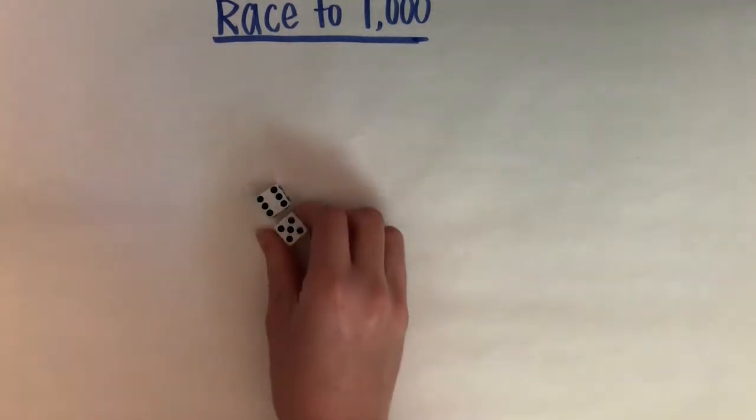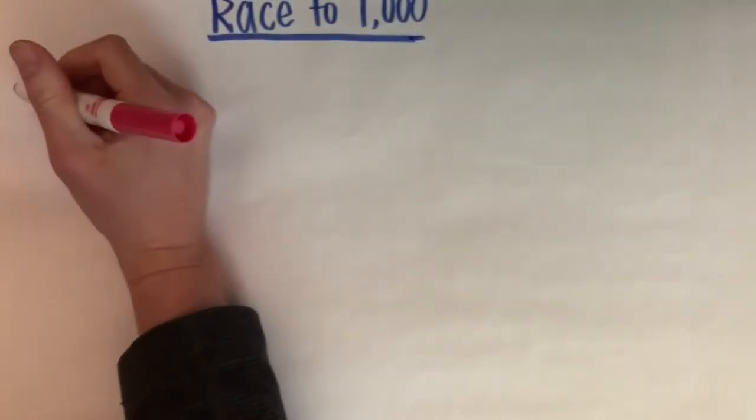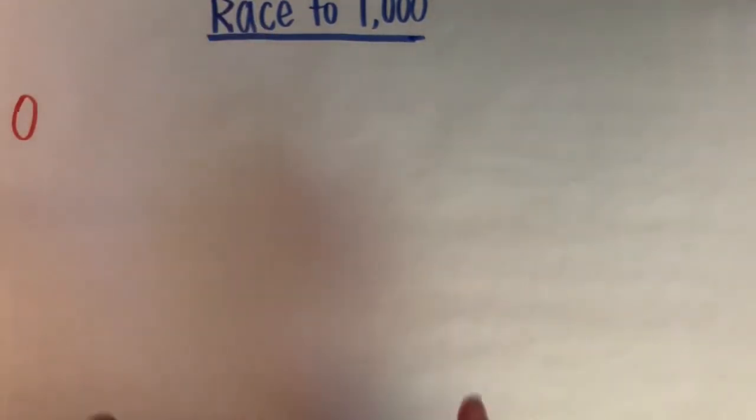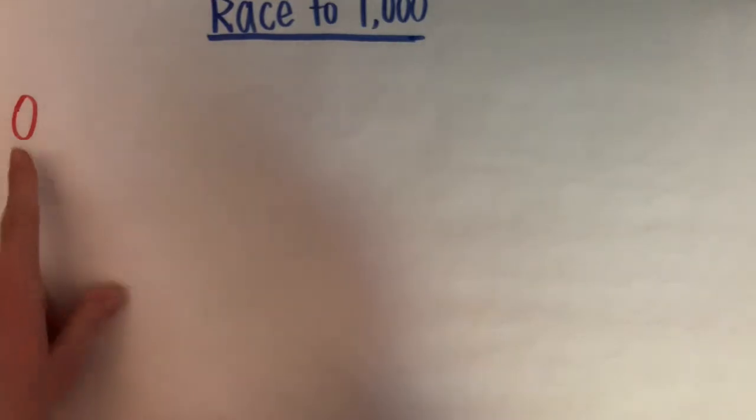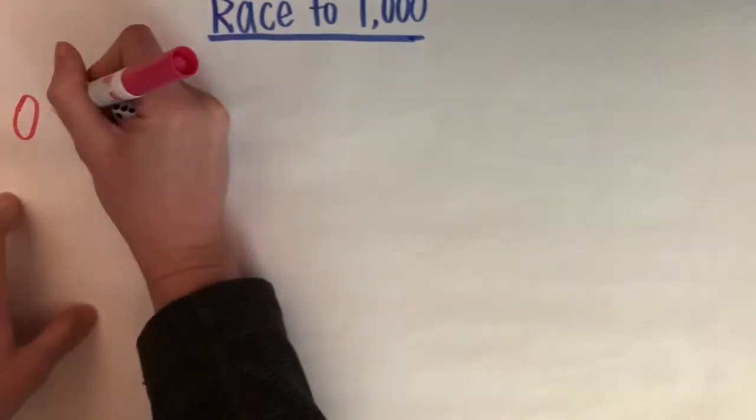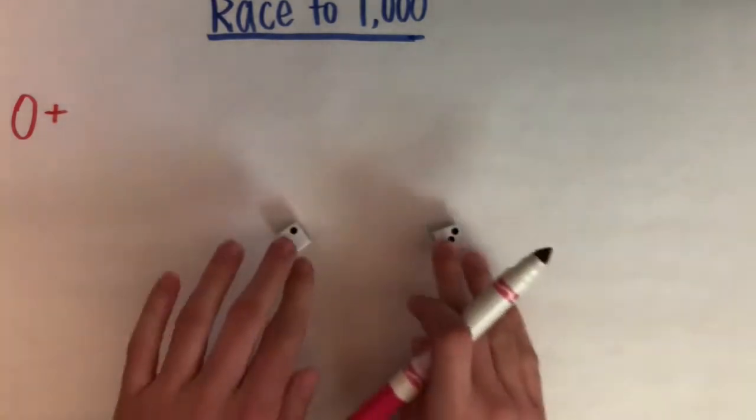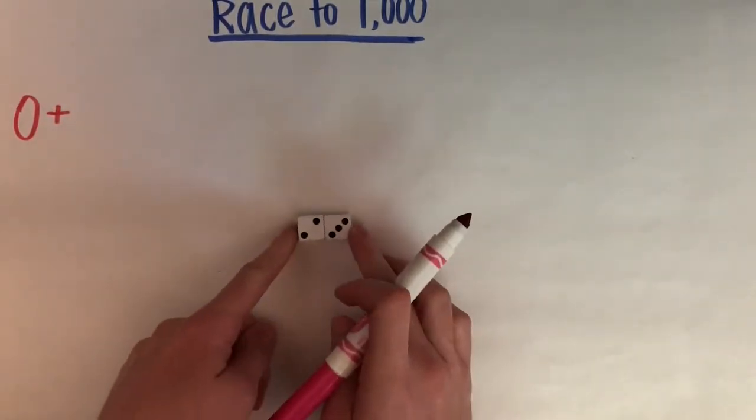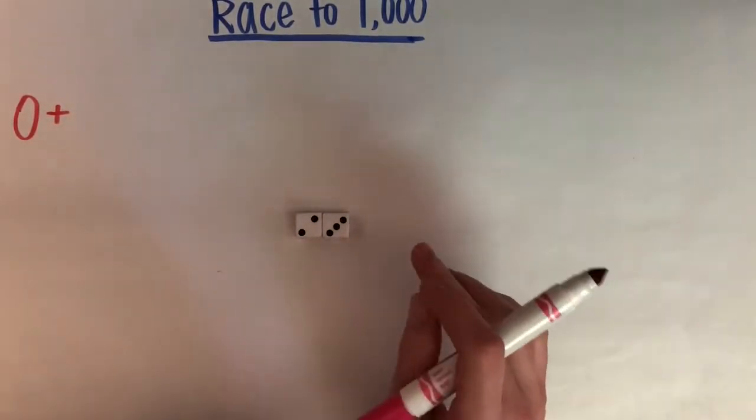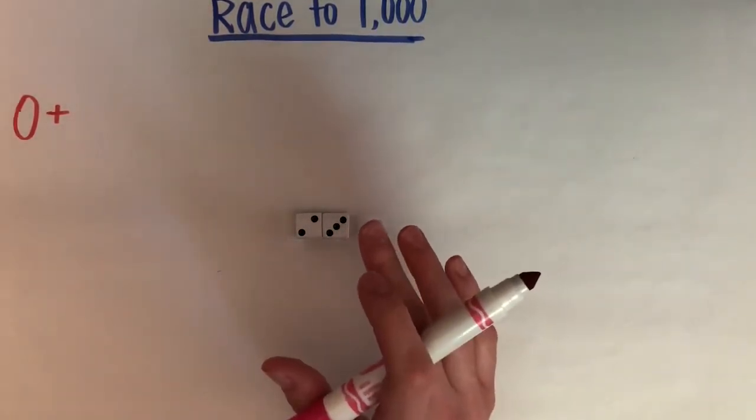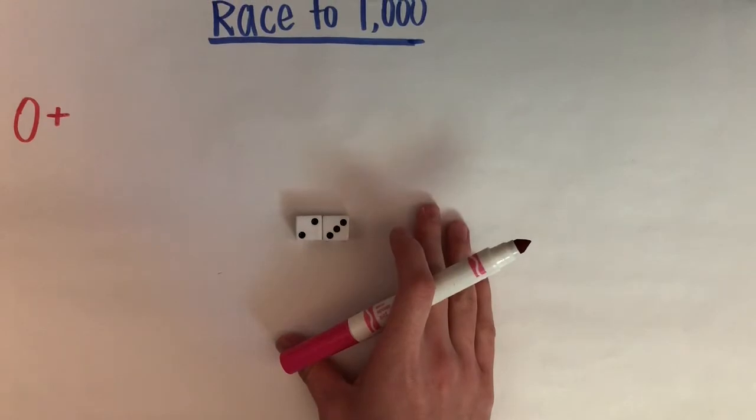In order to get to 1000 we're going to start at zero and then we're going to roll our dice to get a two-digit number that we are going to add to zero. So we're going to be adding in this game. I'm going to roll my dice. Now if I'm trying to get to 1000 first I want to make sure that I'm adding a big number in order to get to 1000 before my partner does.